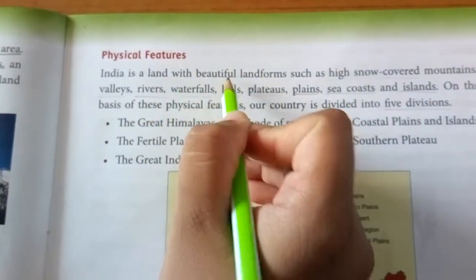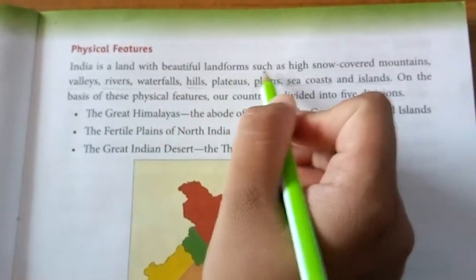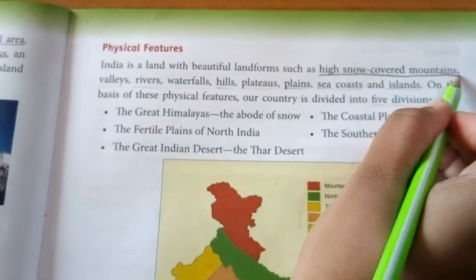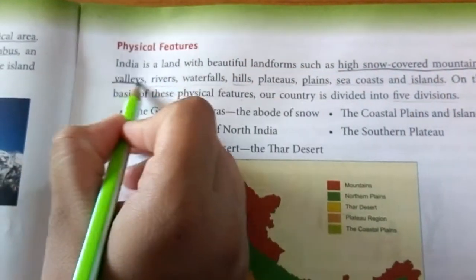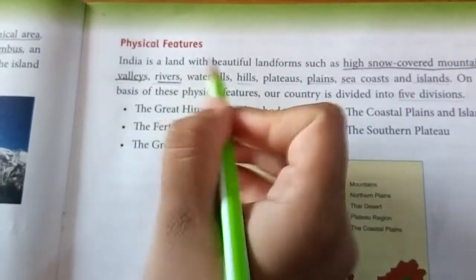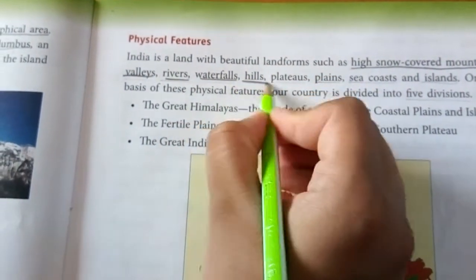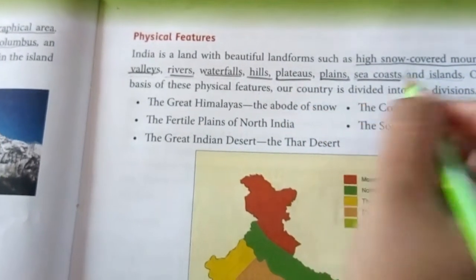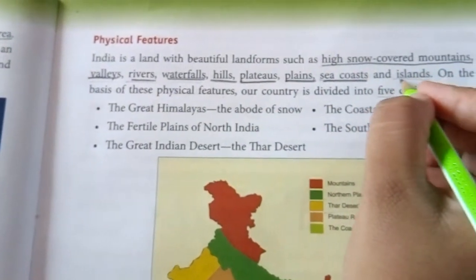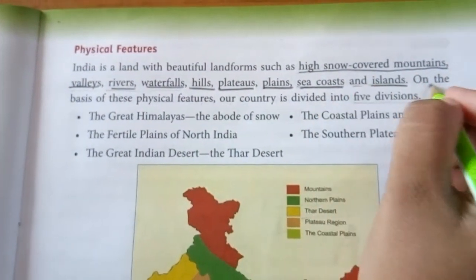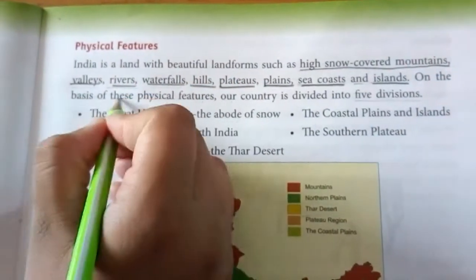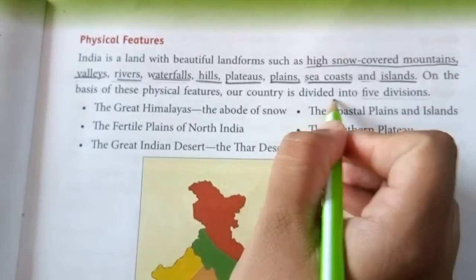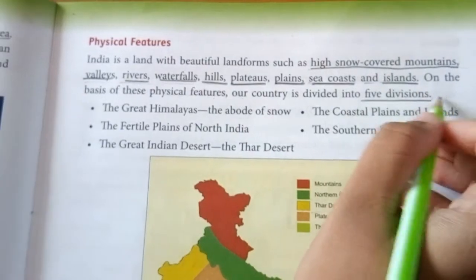India is a land with beautiful landforms such as high snow-covered mountains, valleys, rivers, waterfalls, hills, plateaus, plains, sea coasts, and islands. On the basis of these physical features, our country is divided into 5 divisions.